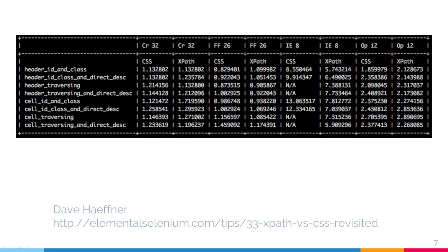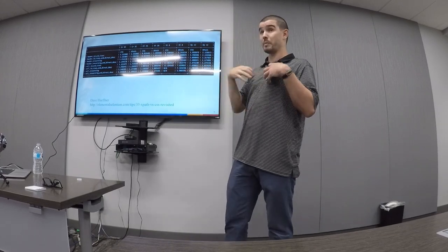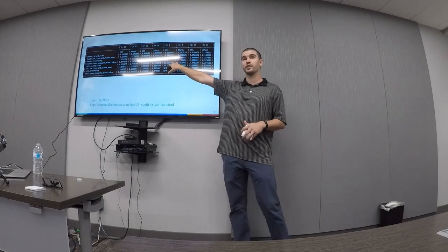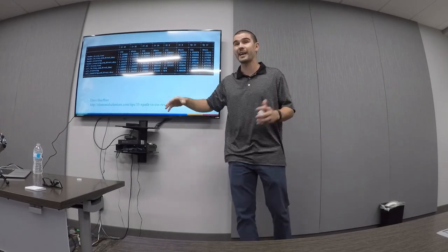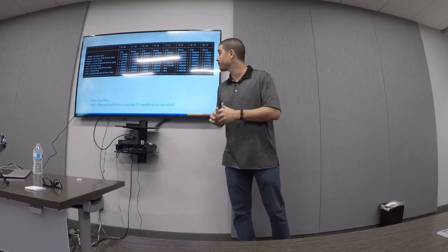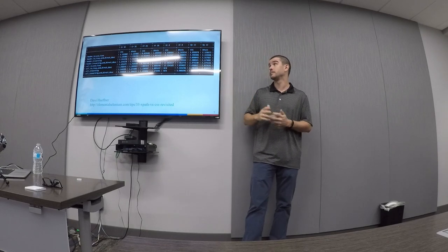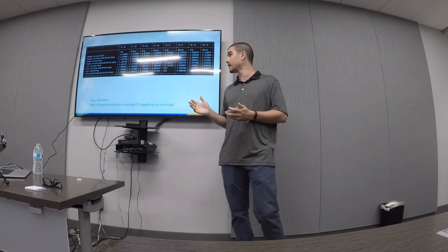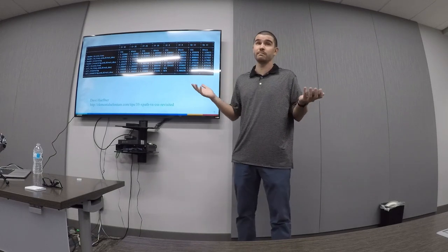These numbers represent the time in seconds for 100 executions. For example, 1.13 seconds to find a locator with CSS in Chrome and essentially the same with XPath. For the second locator, CSS was a little faster; for another, XPath was faster. The biggest takeaway is that Internet Explorer is much slower than other browsers, but CSS and XPath are almost the same — sometimes one is faster, sometimes the other.